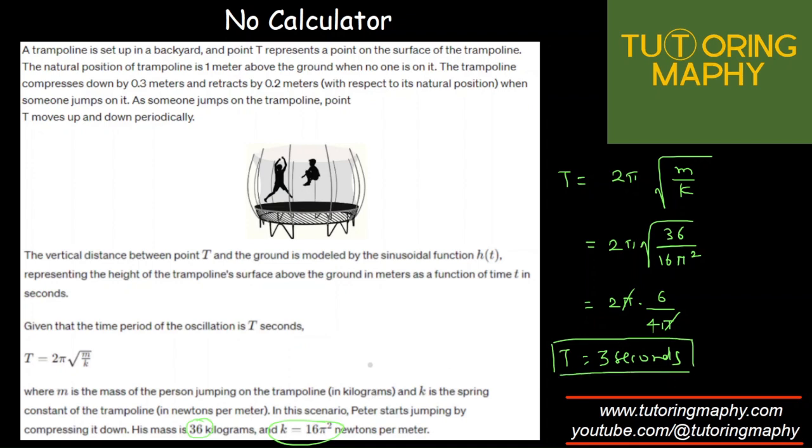Let's make the scenario over here. This is the natural length of the trampoline. This is the ground. We are already given that the natural length is 1 meter above the ground. So this is 1 meter, and it goes down by 0.3 meters and can go up by 0.2 meters.